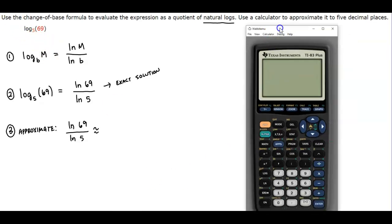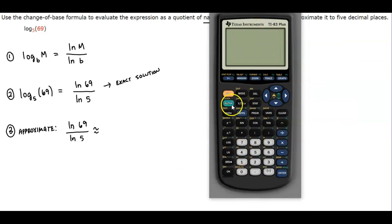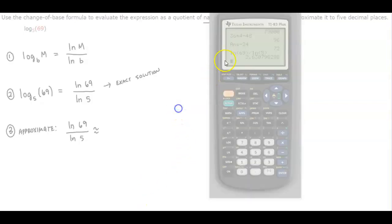So let's use our calculator. We are going to take the natural log of 69, and then we're going to divide that by the natural log of 5. And so we want to round this to five decimal places. So this is going to go 2.63079. So let's go ahead and copy that answer.